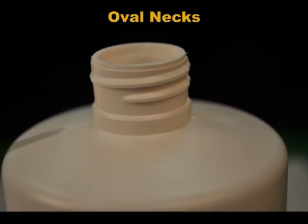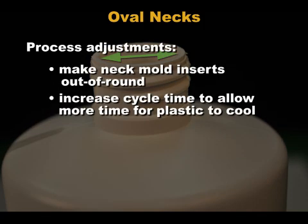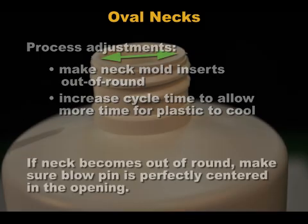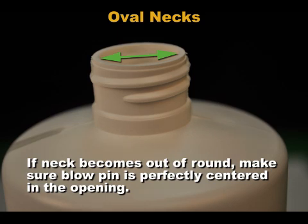Plastic in the neck of the bottle does not shrink the same amount around its circumference. The plastic near the parting lines cools more slowly because that part of the mold is most difficult to cool, causing the neck to shrink more and go out of round — becoming oval. To compensate for this uneven shrinkage, neck mold inserts are made out of round. A less desirable solution is to increase cycle time to allow more cooling. If necks were round previously but no longer are, first check that the blow pin is perfectly centered in the opening.